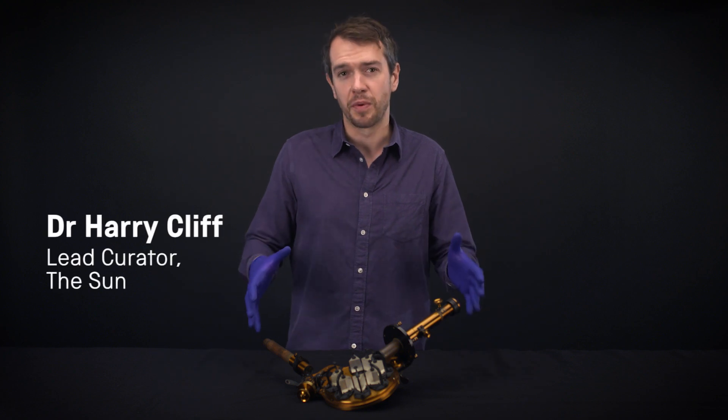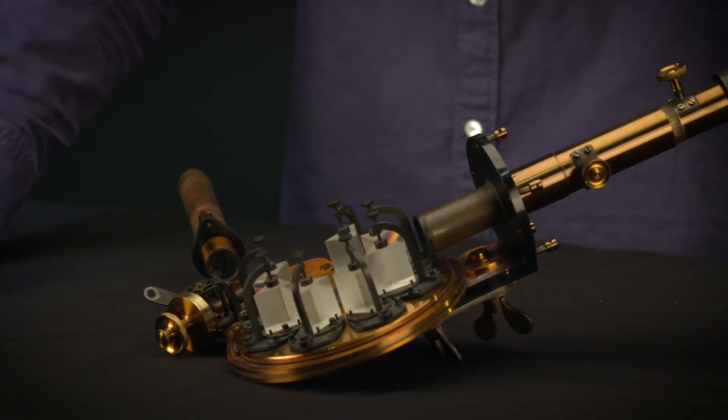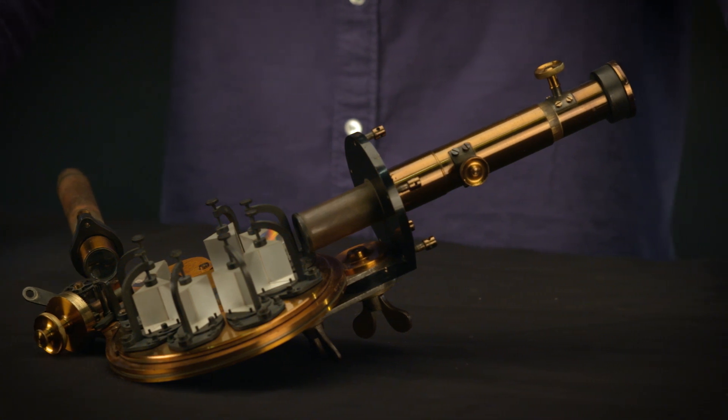This object is a spectroscope and it helped us discover what the Sun is made of. 150 years ago, the astronomer Norman Lockyer used this spectroscope to discover a new element in the Sun.